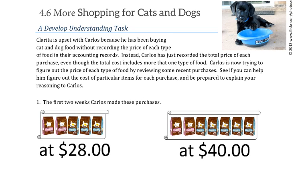Alright, let's take a look at 4.6 more shopping for cats and dogs. Clarita is upset with Carlos because he's been buying cat and dog food without recording the price of each type of food in their accounting records. Instead, Carlos has just recorded the total price of each purchase, even though the total cost includes more than one type of food.